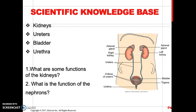Another function of the kidney is to maintain electrolyte balance. Now let's look at the ureters. The ureters are attached to each kidney and pelvis, and they carry urine waste to the bladder. The ureter's main function is to transport urine from the kidney to the bladder.